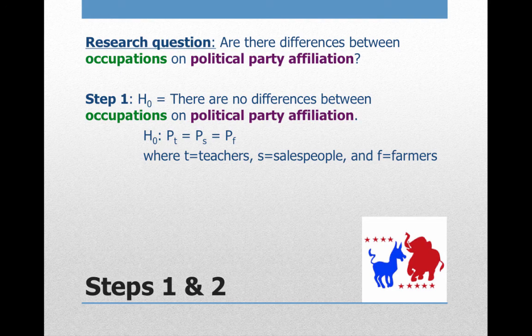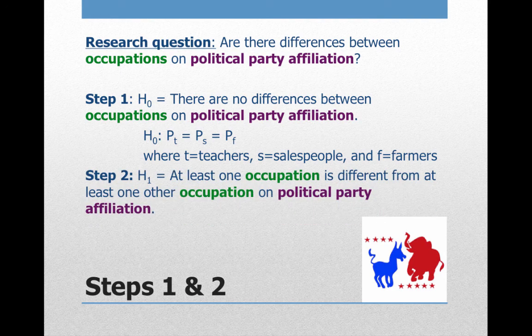For step two, we have three groups in this case. Think back to how we wrote the research hypothesis in ANOVA. For chi-square analysis with three or more groups in the IV — such as our three occupations — we write: at least one occupation is different from at least one other occupation on political party affiliation. If we only had two occupations, say teachers and salespeople, the research hypothesis would simply be: there is a difference between occupations on political party affiliation.